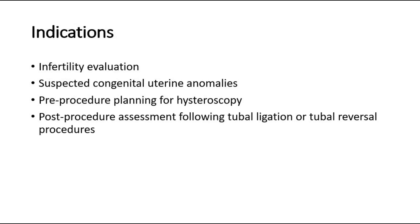Here are some of the indications to do Hysterosalpingography. The first one is for evaluation of infertility. HSG is mainly used in the evaluation of female infertility as it can identify any obstruction in the fallopian tubes, any dilation such as hydrosalpinx, surrounding adhesions, uterine synechiae, intracavitary lesions, and also septa.